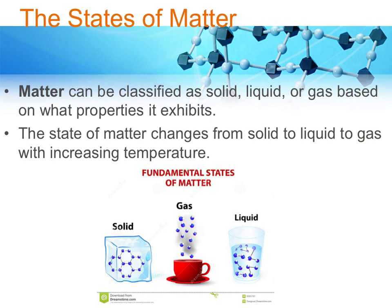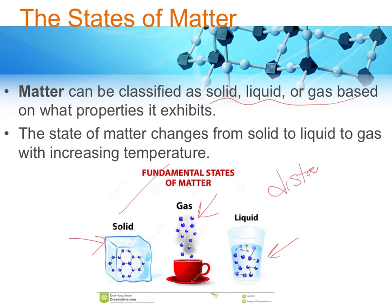I'm going to talk for just a couple minutes about the more common classification by state of matter. The three common ones we're used to discussing are solid, liquid, and gas. Other than the obvious differences we can see with our eyes — solids are very dense, gases we often can't visualize, and liquids flow — at a molecular level, the key difference between these three phases of matter is the distance between the particles.